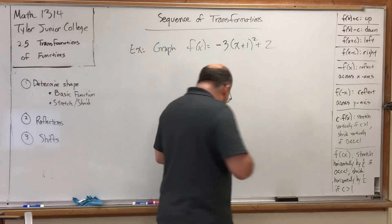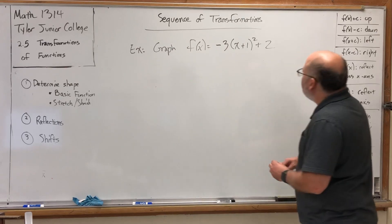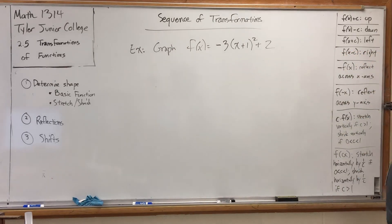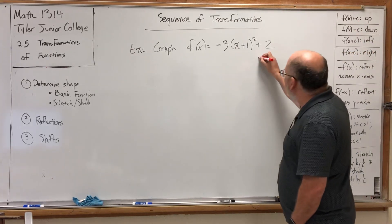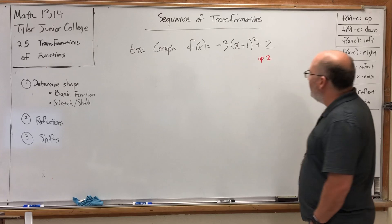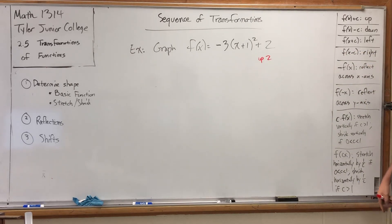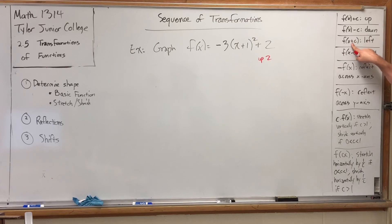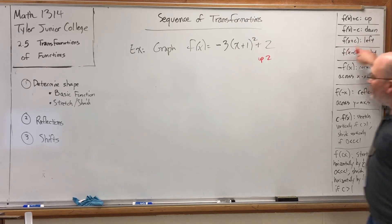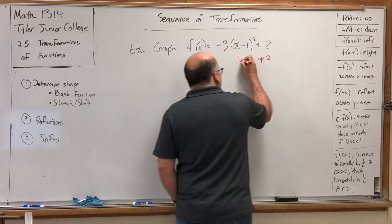Let's identify everything that's going to happen. Let's start with a plus 2 at the end. A plus 2 at the end of the function will cause a transformation of the graph to go up, so this graph will move up 2. What will the plus 1 on the x do? A plus 1 on an x moves it to the left. So this plus 1 will move the graph to the left 1.